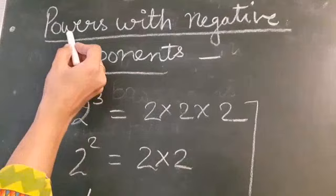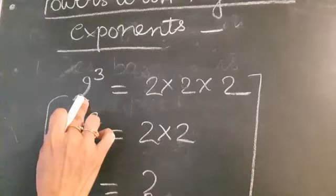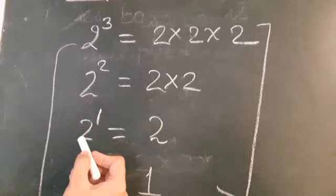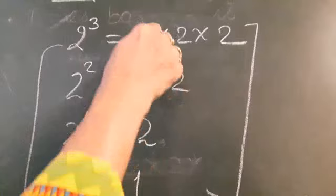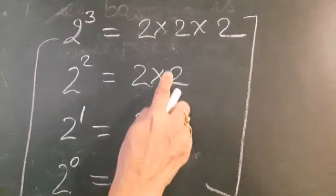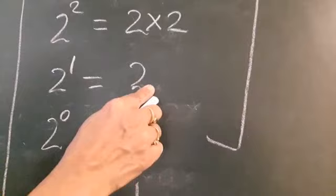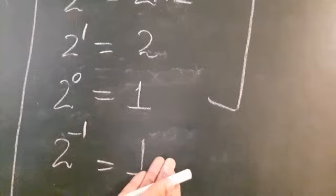Now let's look at powers with negative exponents. Consider the pattern: 2 raised to power 3 means 2 multiplied 3 times; 2 raised to power 2 means 2 multiplied 2 times; 2 raised to power 1 means 2 alone. You can observe that each number is obtained by dividing the previous number by the base 2. So as the power decreases by 1, you divide by the base. This gives the next number in the sequence.